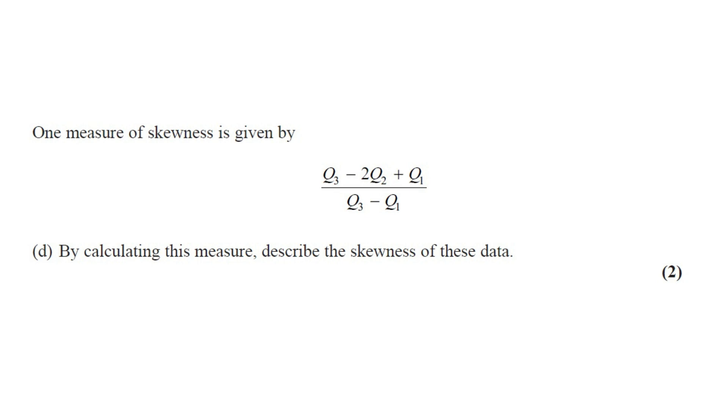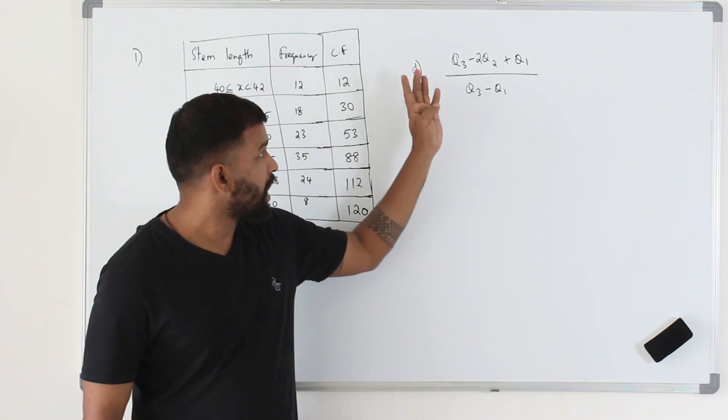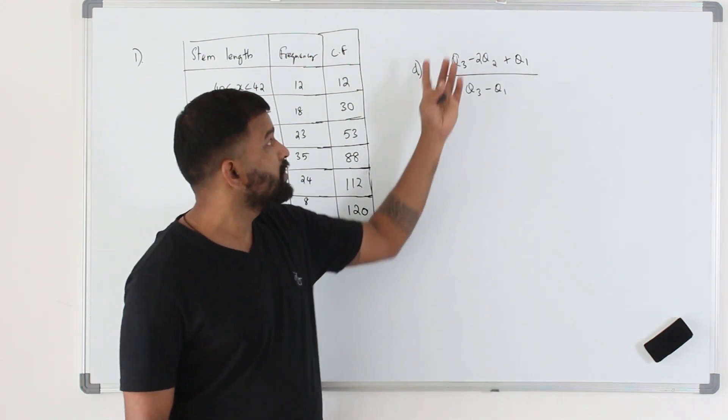One measure of skewness is given by (Q3 - 2Q2 + Q1) divided by (Q3 - Q1). Part D: by calculating this measure, describe the skewness of this data. In this part D, we need to calculate this and then using this value, we need to check the skewness of this data.